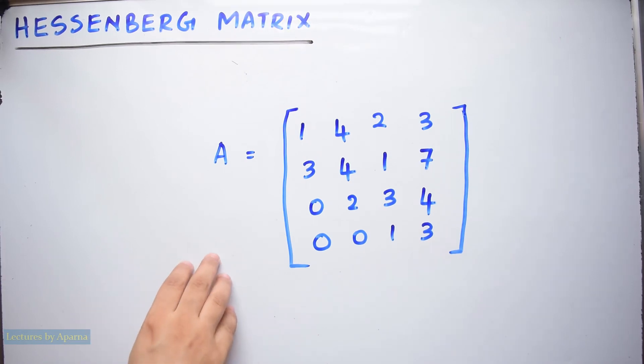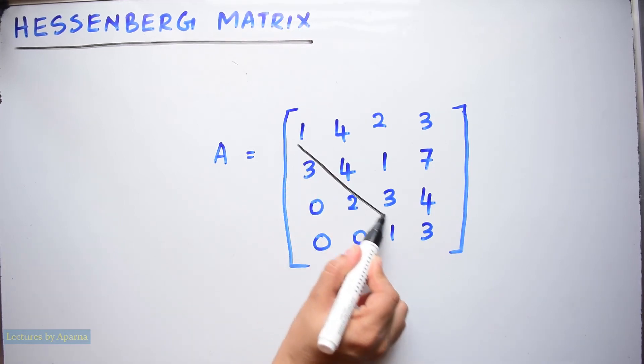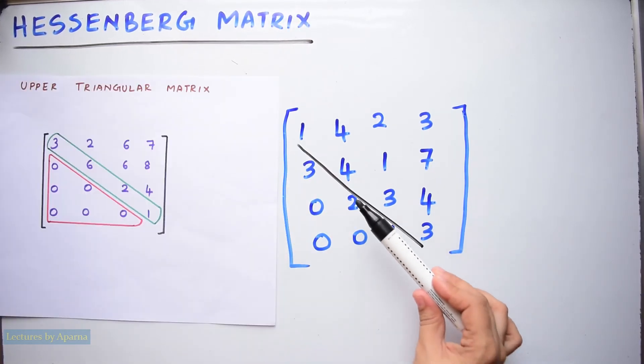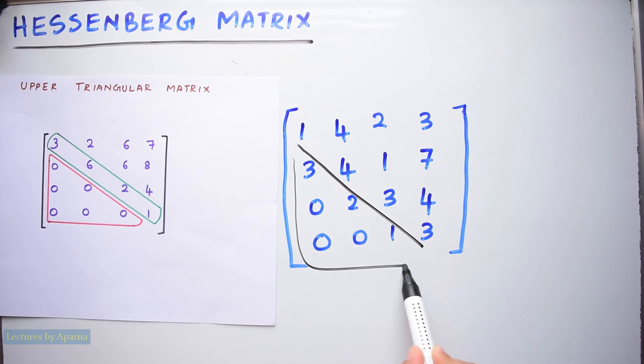Here consider a 4 by 4 square matrix like this. This is the main diagonal. If all elements below this main diagonal is 0, it will become an upper triangular matrix. But it is not like that here. The elements in the diagonal just below the main diagonal are non-zero elements. Such a matrix is called a Hessenberg matrix. So, this is an upper Hessenberg matrix.